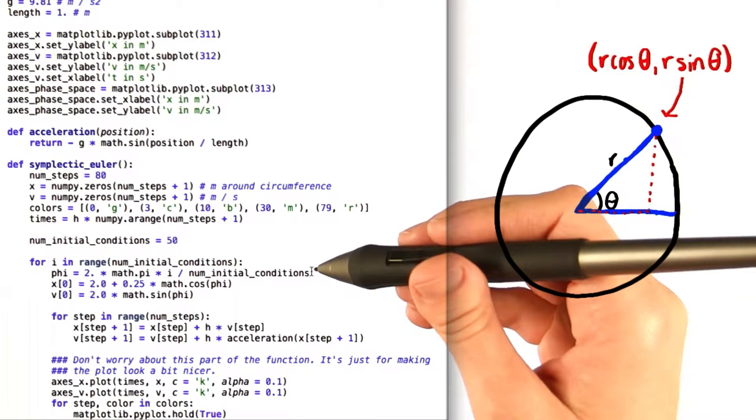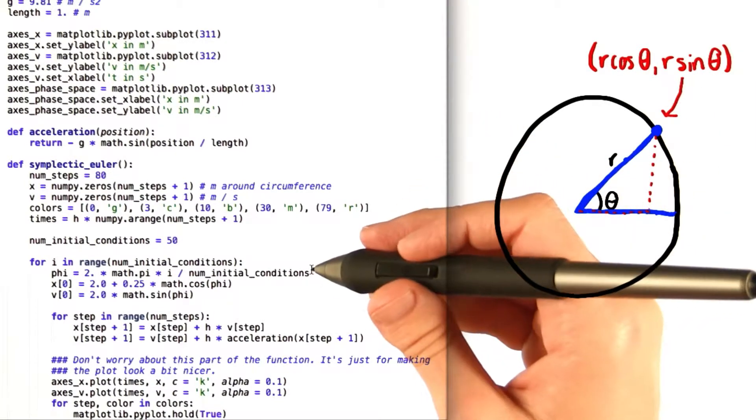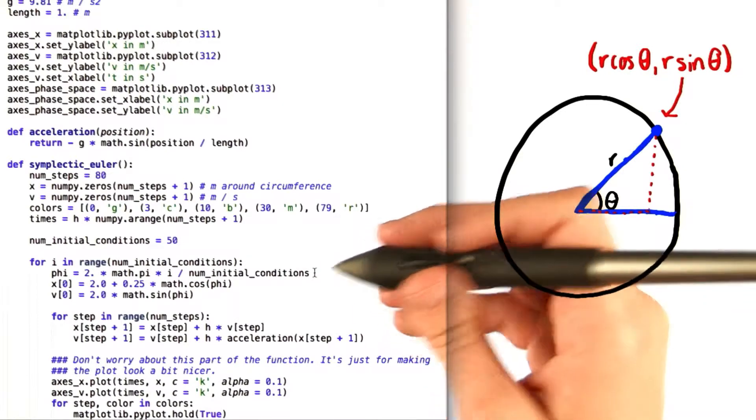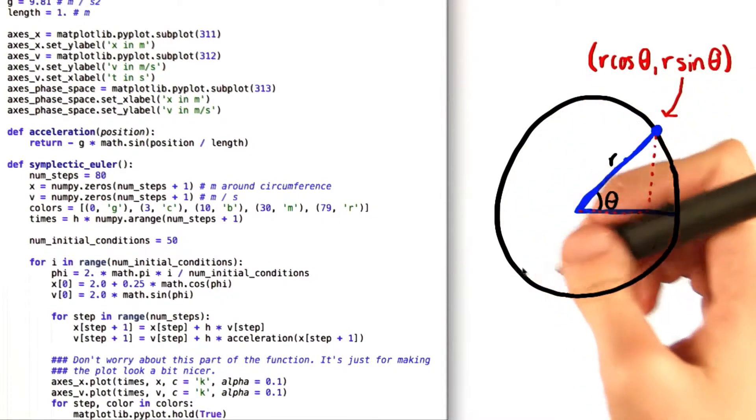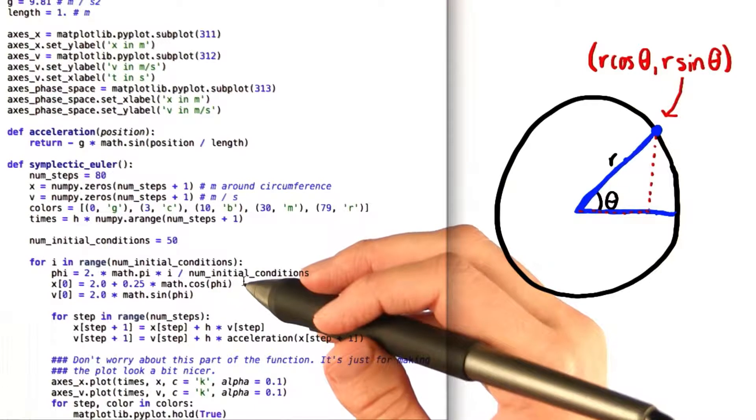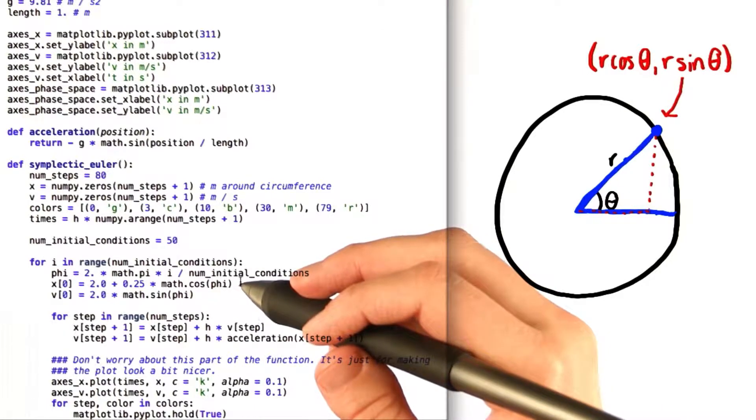Now in our code we created a variable called phi. You could pick any name you want I guess. And phi effectively splits a circle into 49 segments by marking out 50 different points along the circumference. So every time i increases by 1, we're going to step to the next point along the circumference.